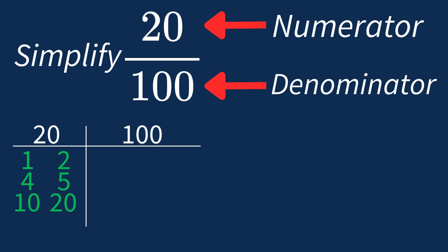For 100, the factors are 1, 2, 4, 5, 10, 20, 25, 50, and 100. So the largest common factor between 20 and 100 is 20.